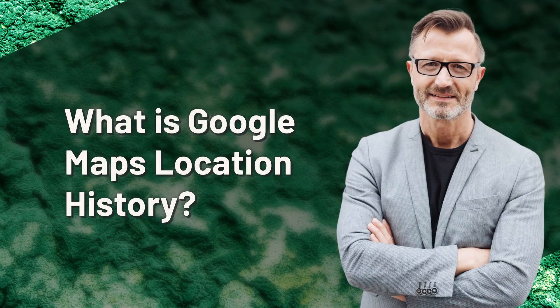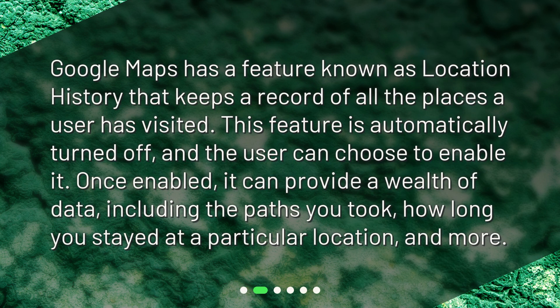What is Google Maps' location history? Google Maps has a feature known as location history that keeps a record of all the places a user has visited. This feature is automatically turned off and the user can choose to enable it. Once enabled, it can provide a wealth of data, including the paths you took, how long you stayed at a particular location, and more.